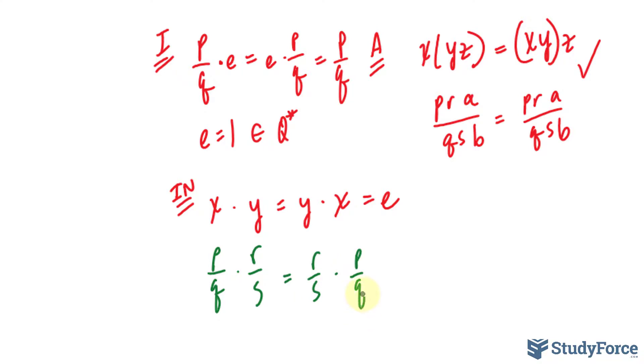Now if p/q, let's say, were 3/2, and r/s was 2/3, multiplying these together, they would all cancel out, giving you back 1, which is the identity.